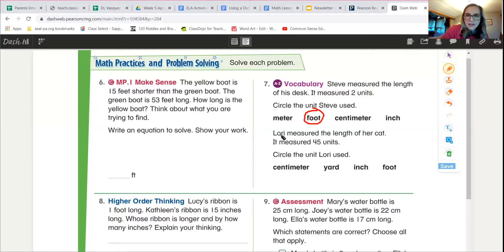You're gonna do the same thing down here for the second one. Lori measured the length of her cat. So think of your average size house cat. It measured 45 units.